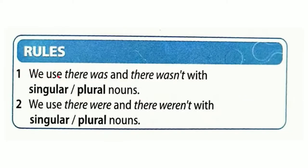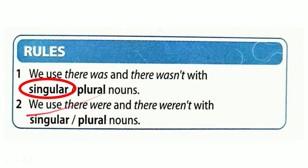The rules. We use 'there was' and 'there wasn't' with singular nouns — meaning only one object or item. We use 'there were' and 'there weren't' with plural nouns — meaning more than one.